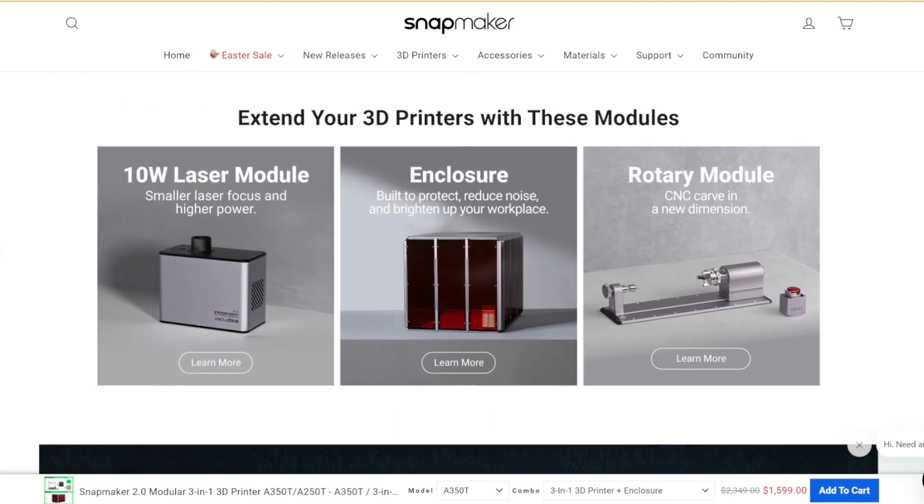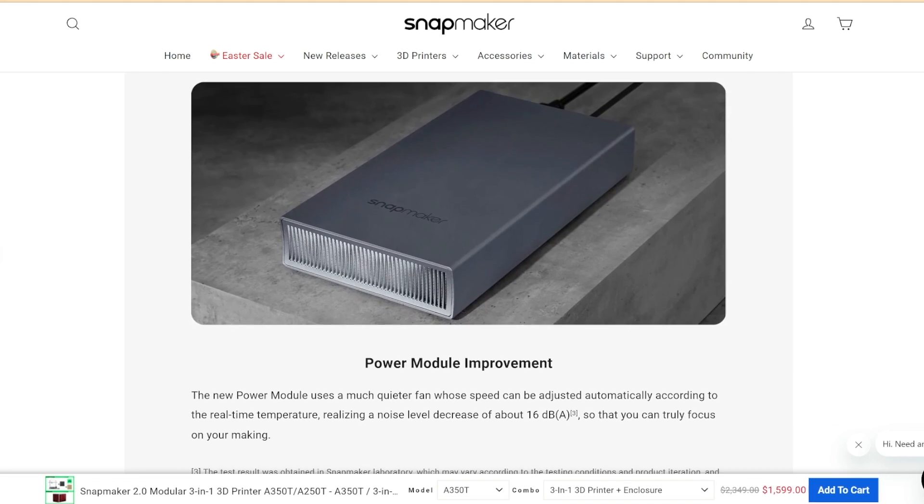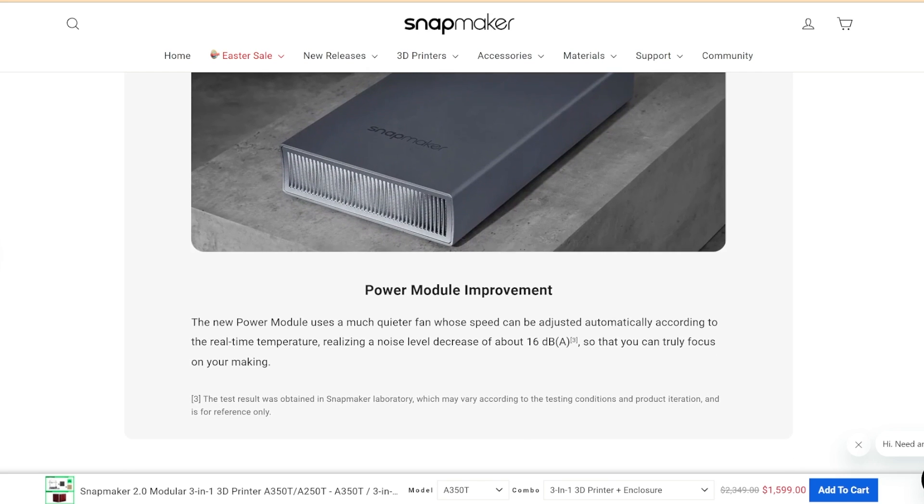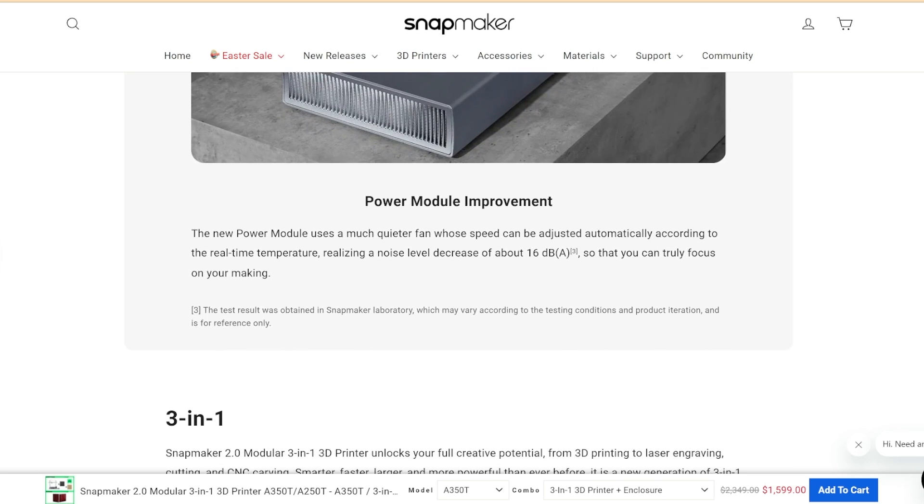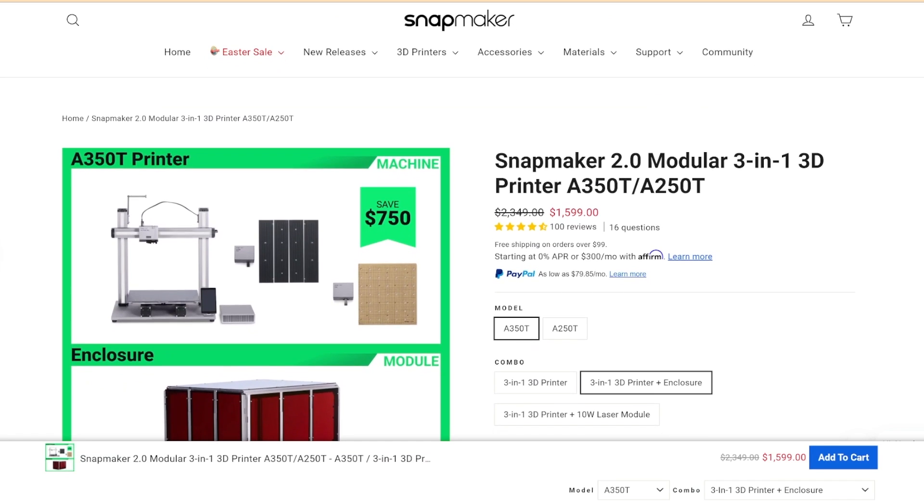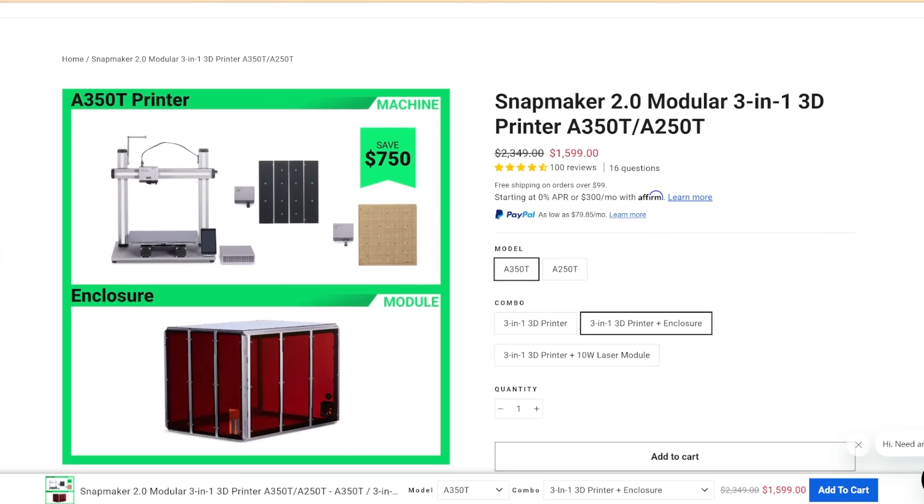They make a rotary where you can have a fourth axis. I already mentioned the 10 watt laser head upgrade, which I think is a great idea. And then the dual extrusion 3D printing head, they have that as an upgrade as well, and then the enclosure. So there are a ton of options to customize the machine to your likings, and you're not stuck. It's not a dead end. They're constantly upgrading this machine.